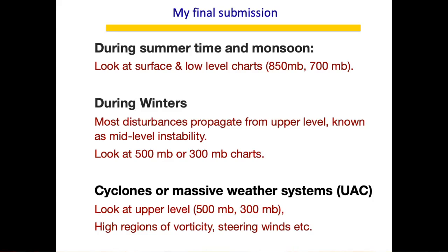To summarize: during summer and monsoon, I look at surface and low-level charts — 925 mb to identify confluence or lines of discontinuity, and 850–700 mb to confirm whether convergence can sustain due to a trough or low pressure. During winter, disturbances propagate from upper levels, so I look at 500 and 300 mb charts to see how the jet stream is undulating and how disturbances percolate downward.